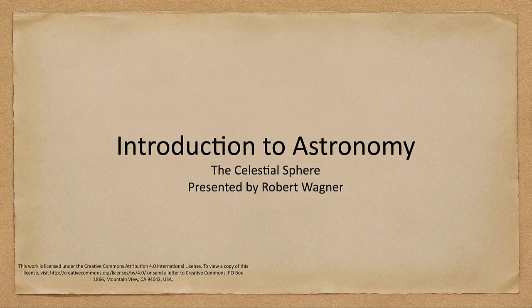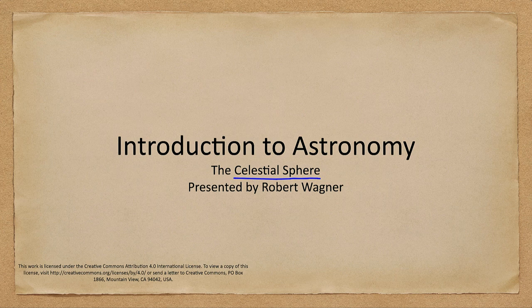Greetings and welcome to the introduction to astronomy. In this lecture, we are going to talk about the celestial sphere as a way of being able to measure positions on the sky from the earth. This is what we see when you go out at night and look up at the sky — you are seeing the celestial sphere, which is imagined to be a great sphere surrounding Earth.